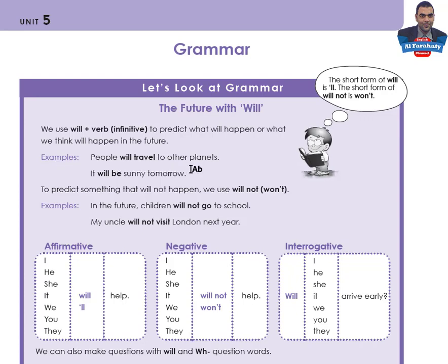Example: 'People will travel to other planets.' We have 'will' plus the verb 'travel' in the infinitive. The meaning of this sentence is to show our prediction — we predict this may happen, but it is not 100% certain. Another example: 'It will be sunny tomorrow.' I am not sure, but this is only a prediction.